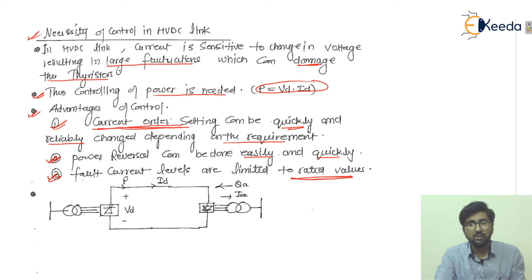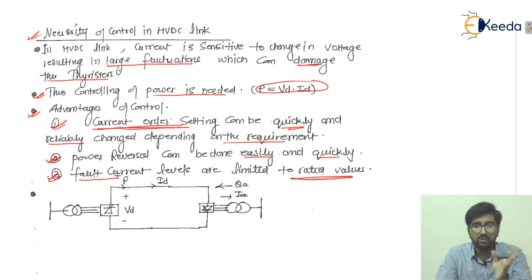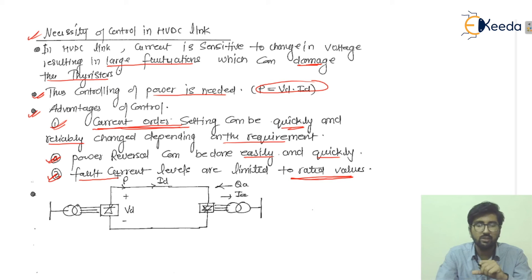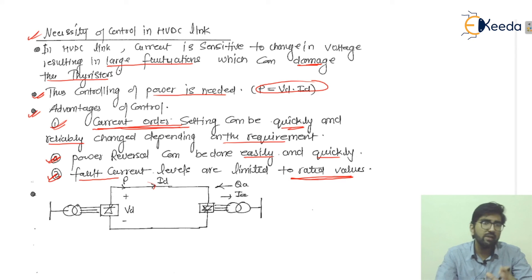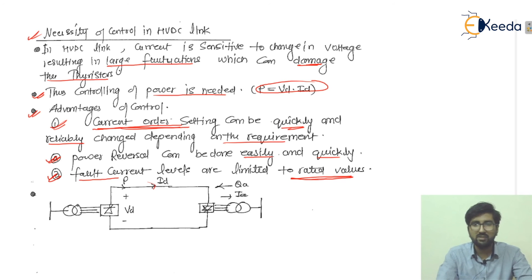Fault current levels are limited to rated values. If a fault occurs, the damage could propagate to other equipment. However, using control techniques on the rectifiers, inverters, and converters prevents the fault current from flowing and minimizes it to rated values. Because the resistance in HVDC links is low, high fault currents could otherwise damage equipment. This is a key benefit of using control schemes in HVDC systems.